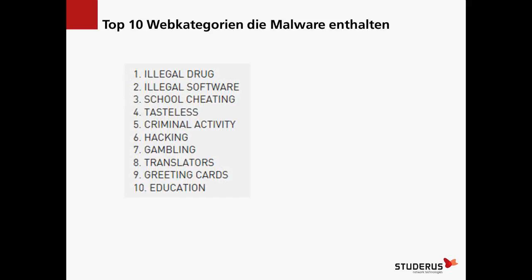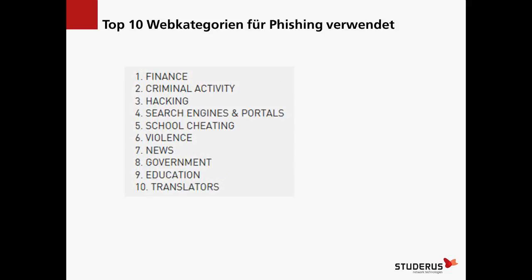Siren hat in einem Report bekanntgegeben, auf welchen Top-10-Webkategorien Malware platziert worden ist. Wenn man diese Liste anschaut, haben praktisch die meisten dieser Kategorien in einem KMU-Netzwerk nichts verloren. Man könnte also mit einem Content-Filter, wo diese Kategorien gesperrt sind, schon mal einen guten Dienst ausüben und die Sicherheit erhöhen. Bei Phishing sieht es anders aus – da sind Finance-Seiten, Search Engines, Portale, News-Seiten, Government und Bildungsseiten betroffen, also Seiten die man täglich nutzt.